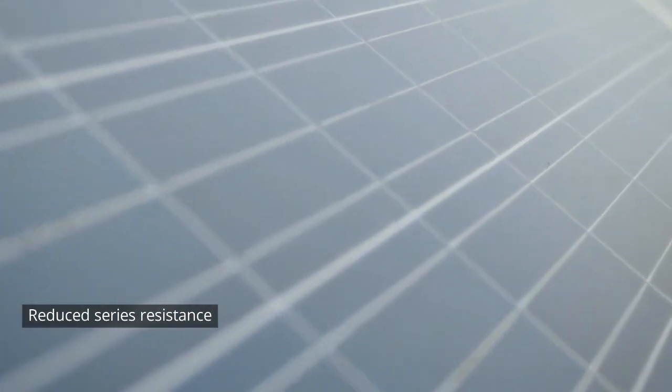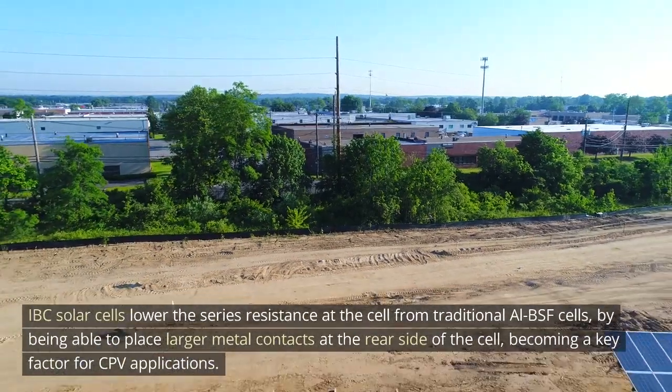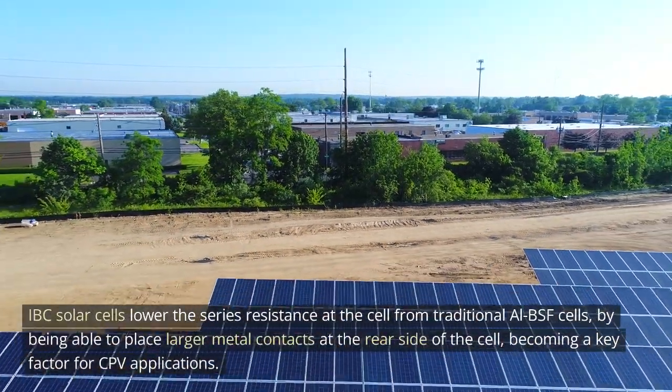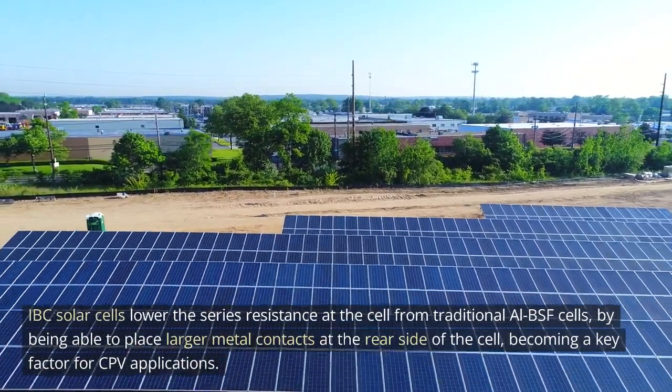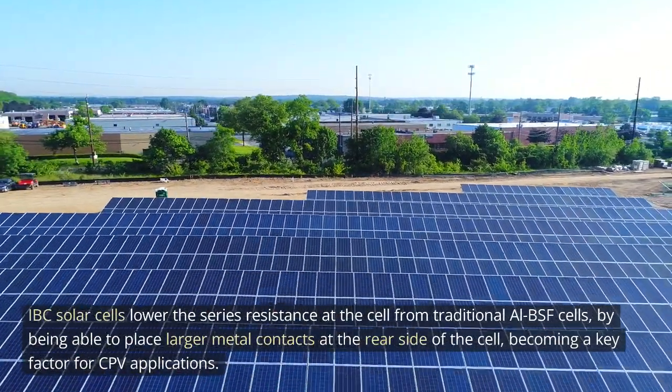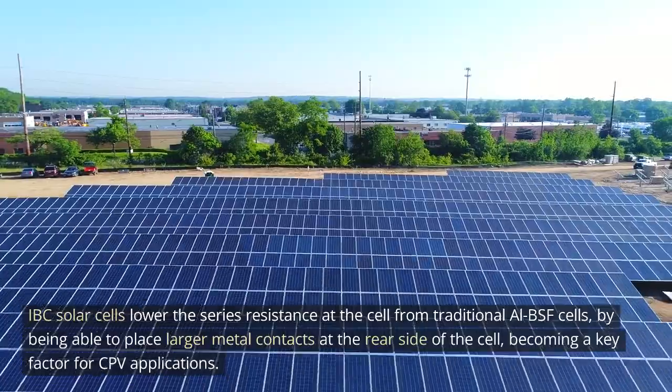Reduce series resistance. IBC solar cells lower the series resistance at the cell from traditional LBSF cells by being able to place larger metal contacts at the rear side of the cell, becoming a key factor for CPV applications.